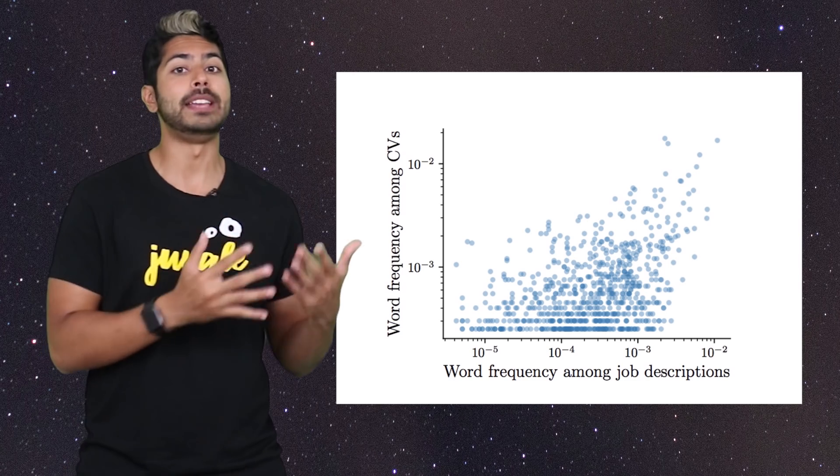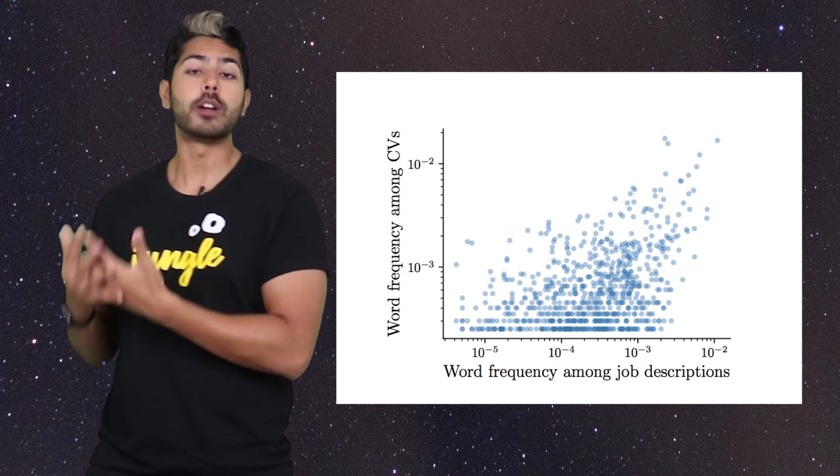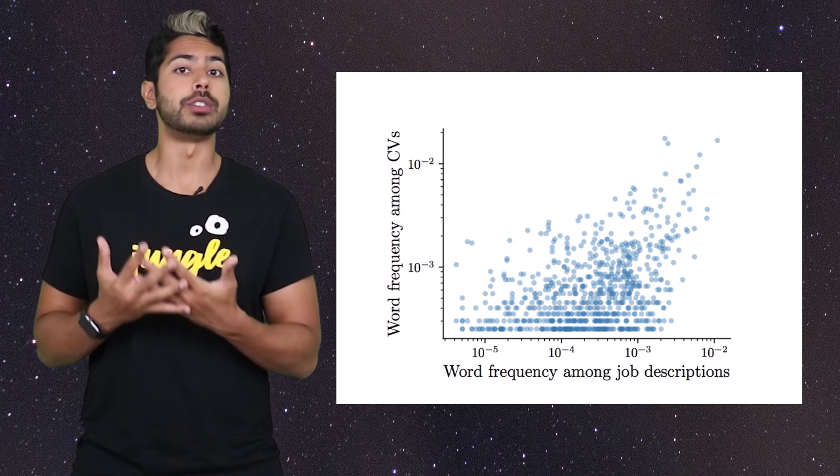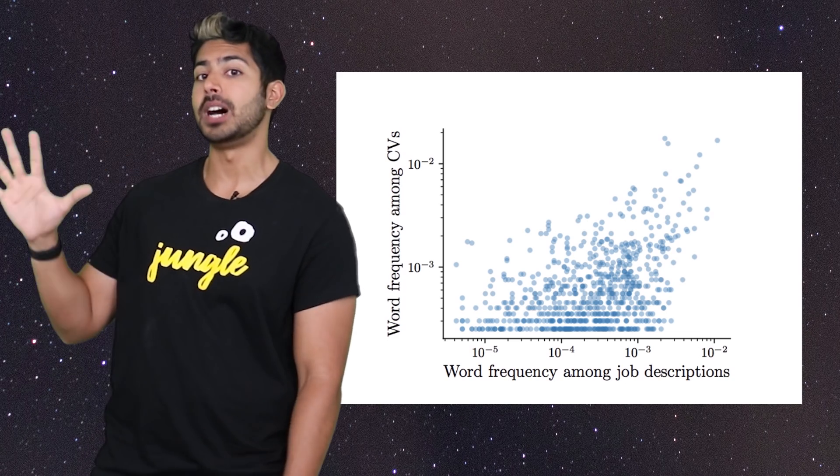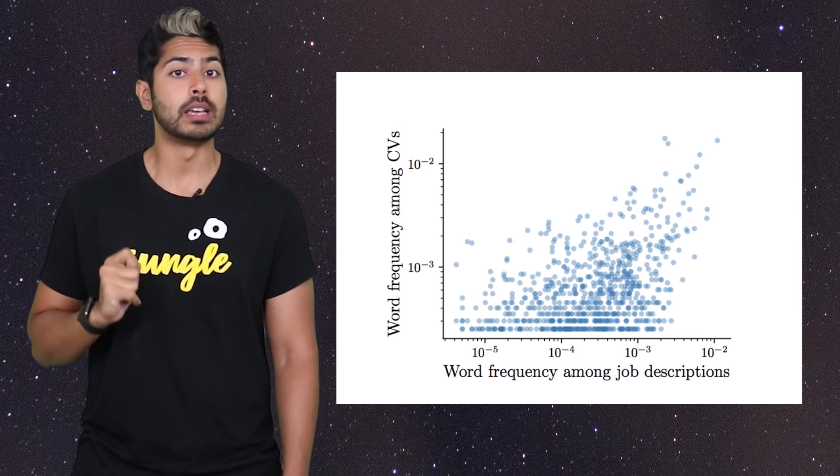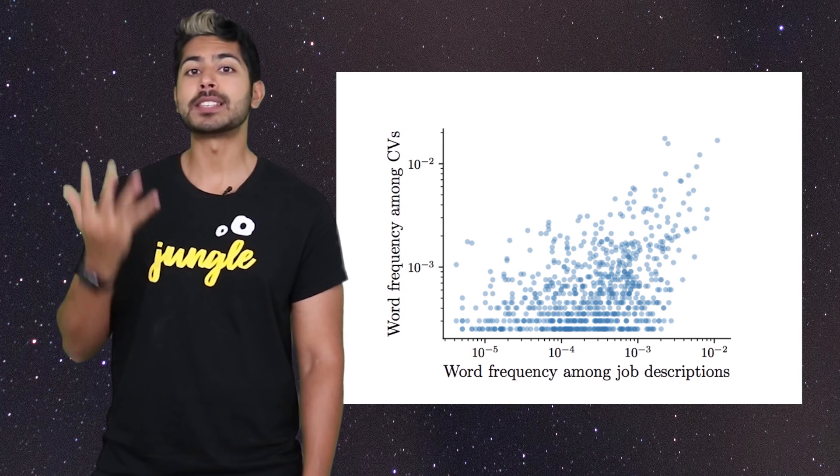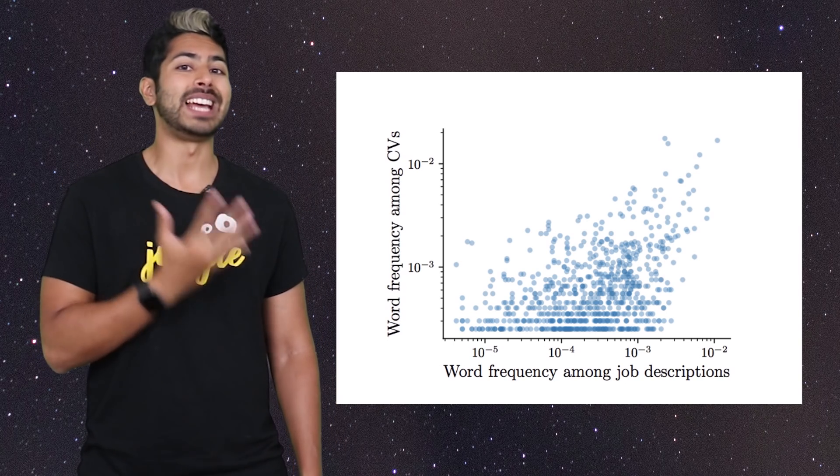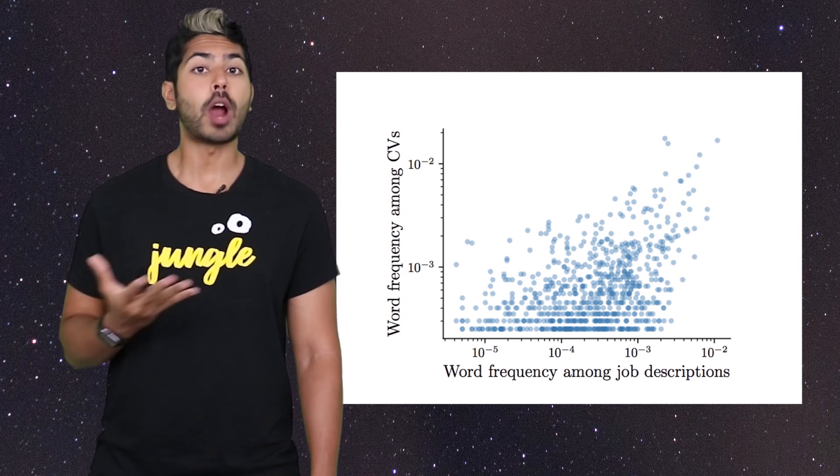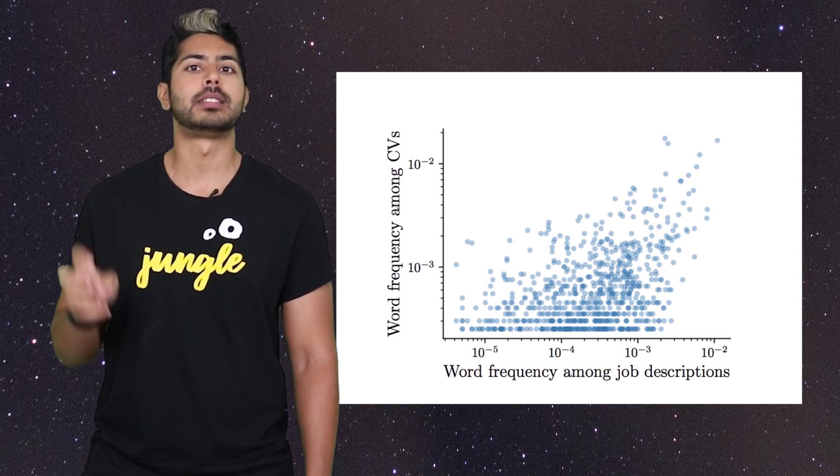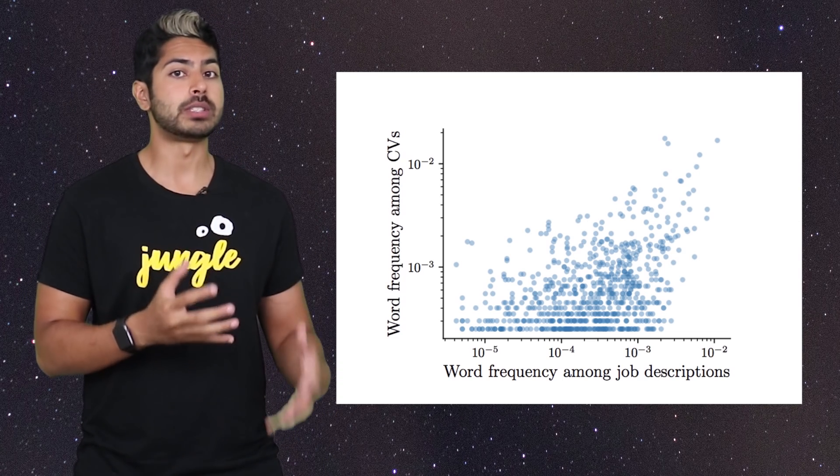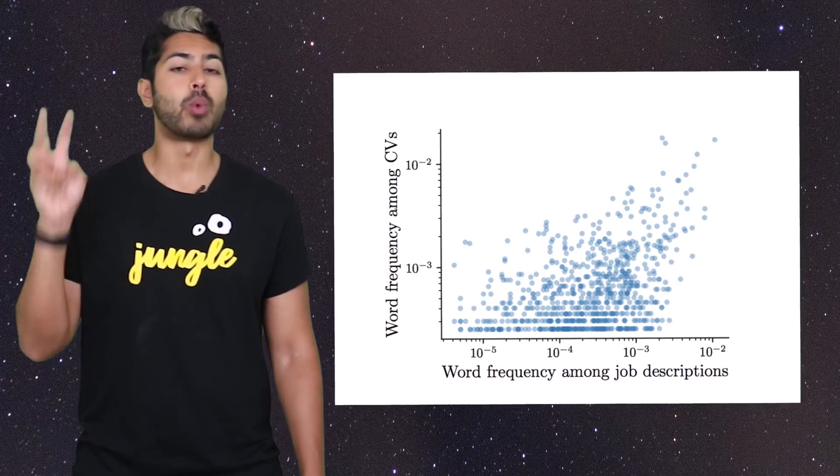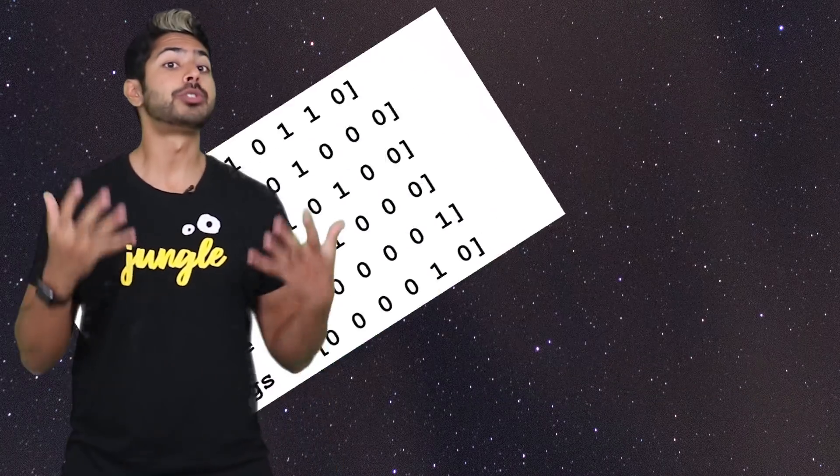To better understand how the two domains differed, they mapped out word frequencies of all words appearing at least five times in both datasets. The results showed that in resumes, people were much more likely to use adjectives describing themselves as adaptable and polite, whereas job descriptions more often mentioned roles like director and coordinator. An interesting finding.